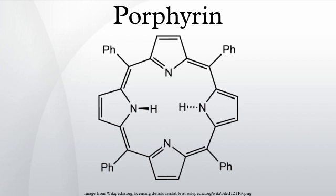In plants, algae, bacteria, and archaea, ALA is produced from glutamic acid via glutamyl-tRNA and glutamate-1-semialdehyde. The enzymes involved in this pathway are glutamyl-tRNA synthetase, glutamyl-tRNA reductase, and glutamate-1-semialdehyde-2,1-aminomutase. This pathway is known as the C5 or Beale pathway.